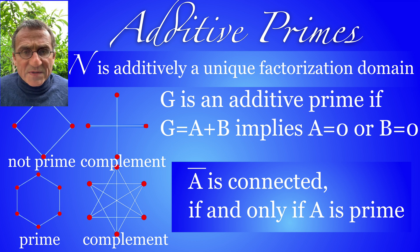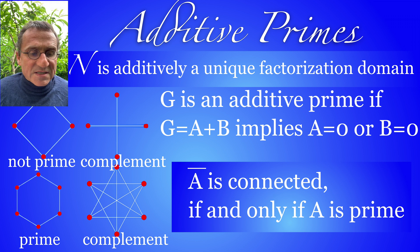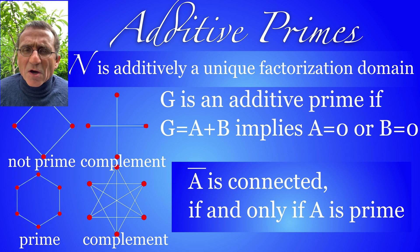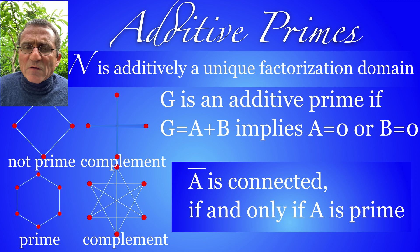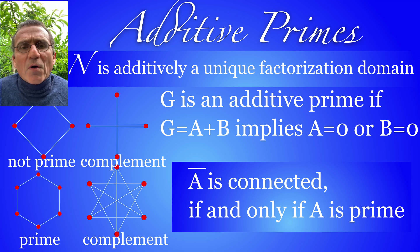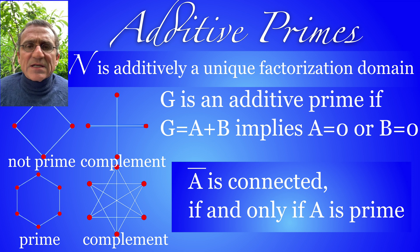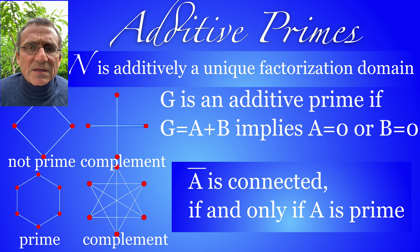For example, the cyclic graph with four elements is not a prime. It's the sum of two zero-dimensional spheres and the complement, you see that cross is not connected. But the cyclic graph with five or more vertices, the complement is connected and these are additive primes.